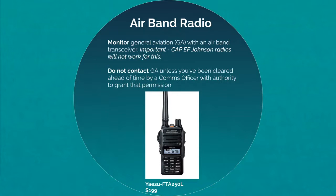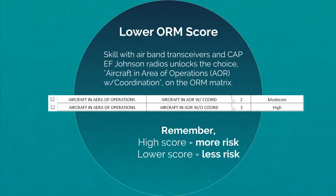It's important to monitor only — do not contact general aviation without clearing ahead of time with a comms officer who has the authority to approve you. If you can use radios reliably to coordinate with nearby airplanes, you can save a point on your ORM matrix by choosing 'aircraft in areas of operation with coordination' — good for two points instead of three.